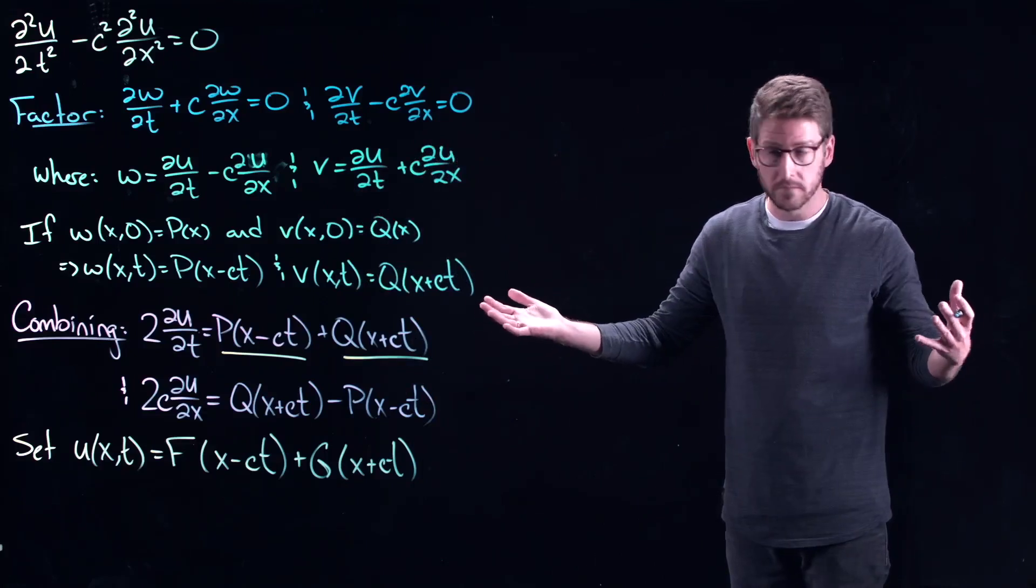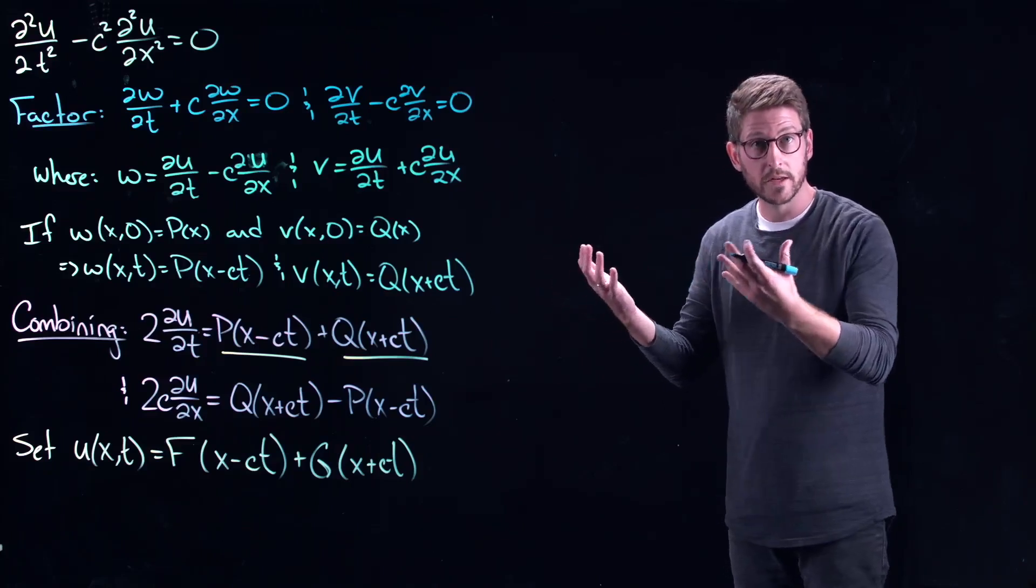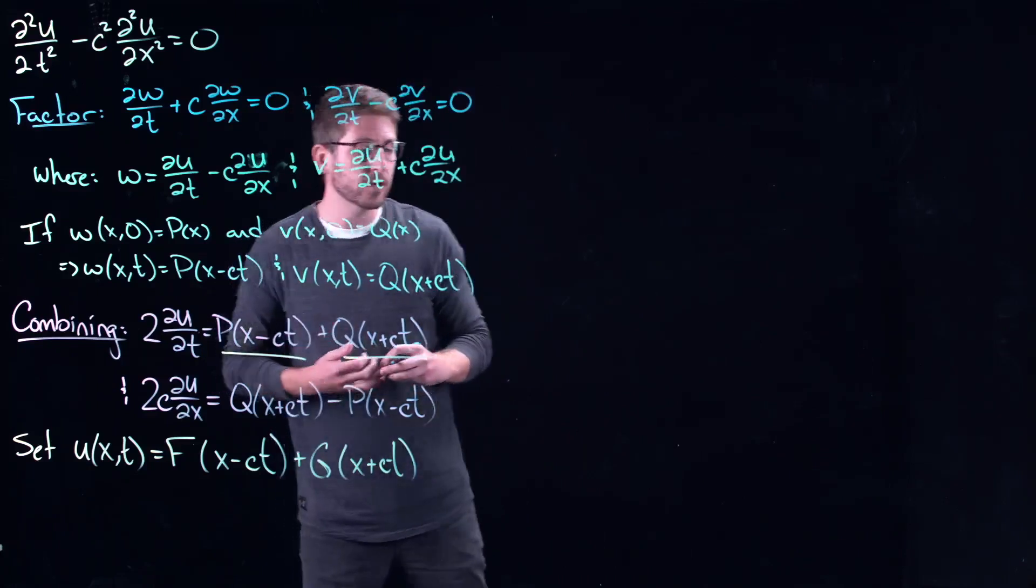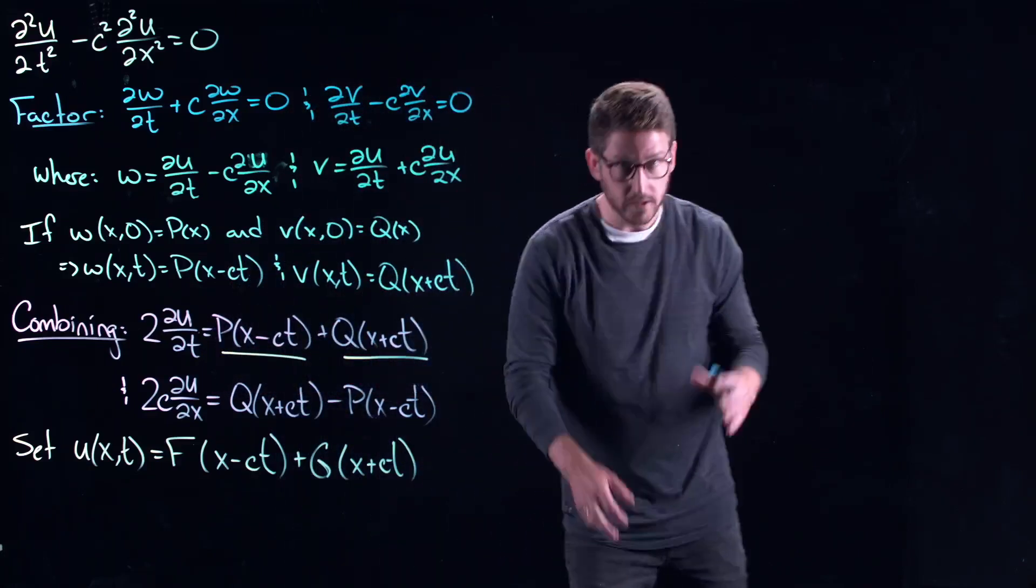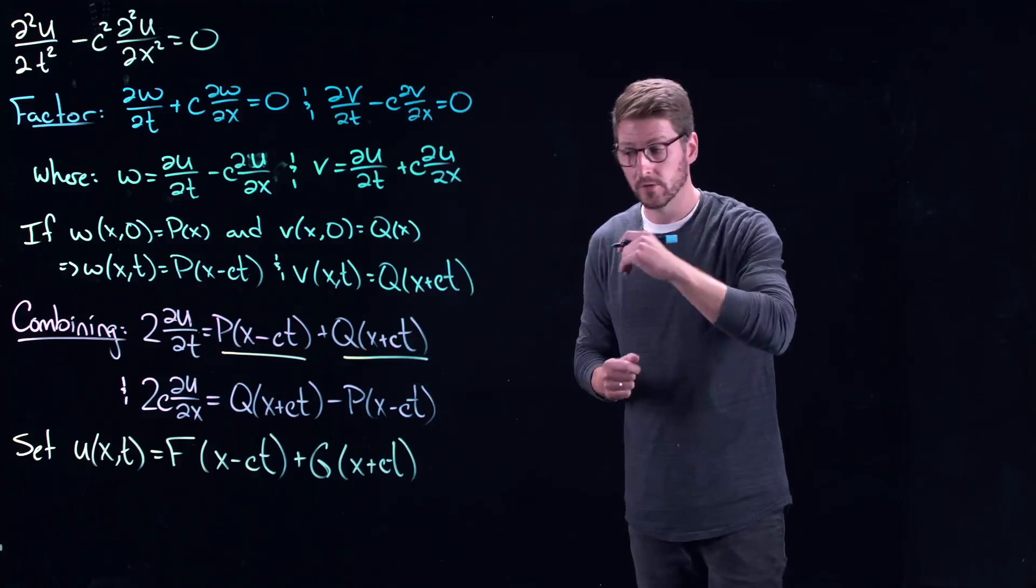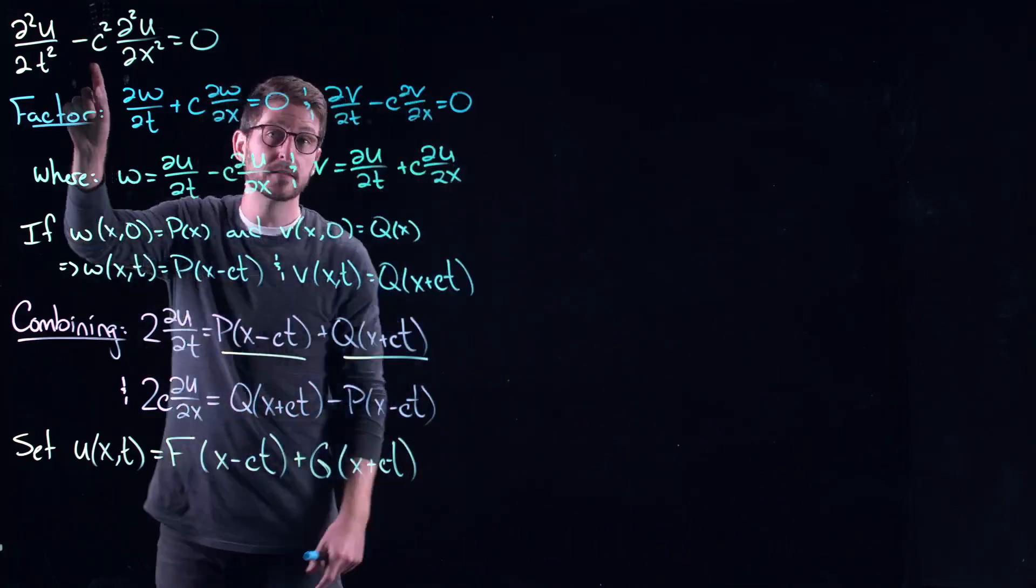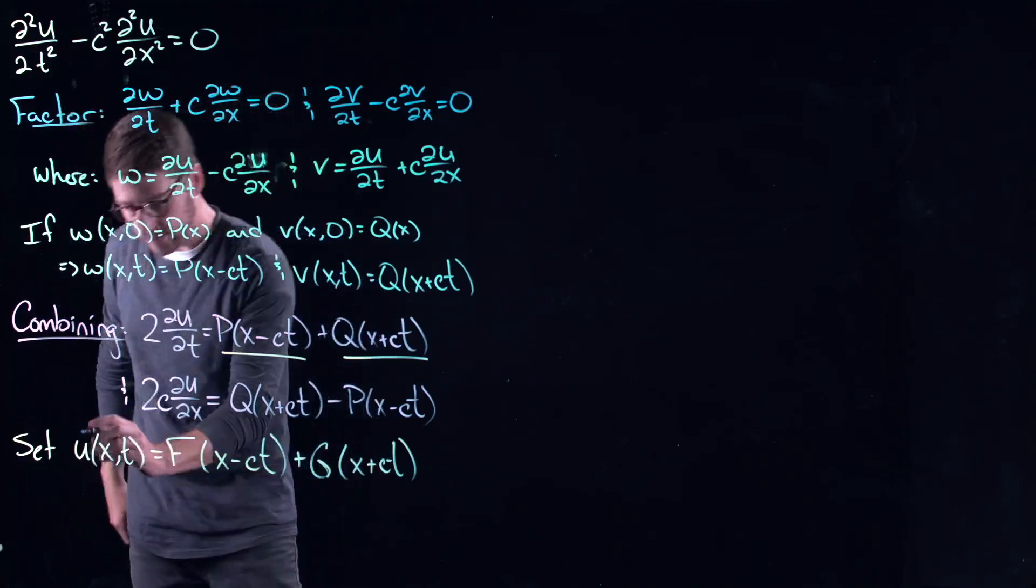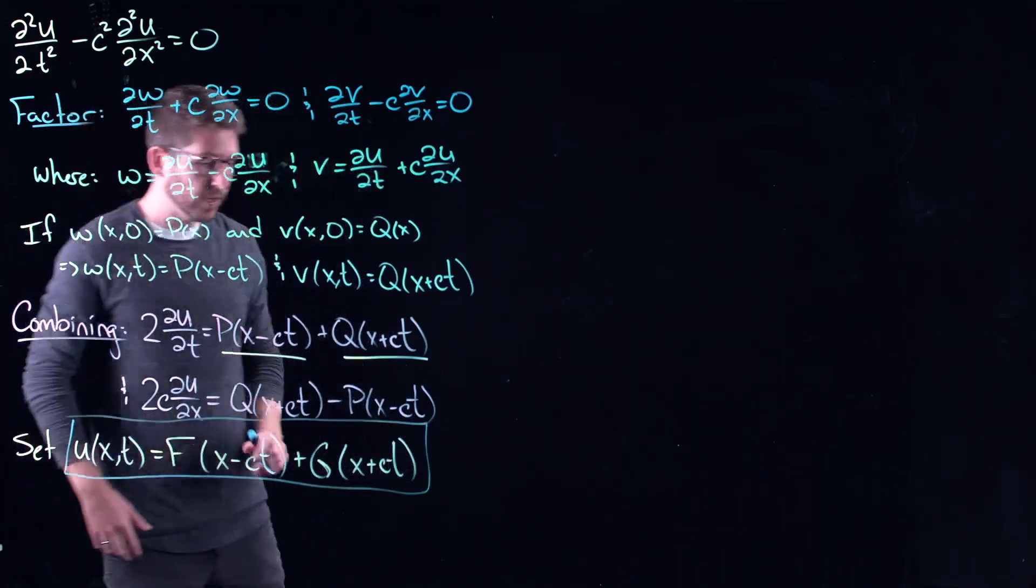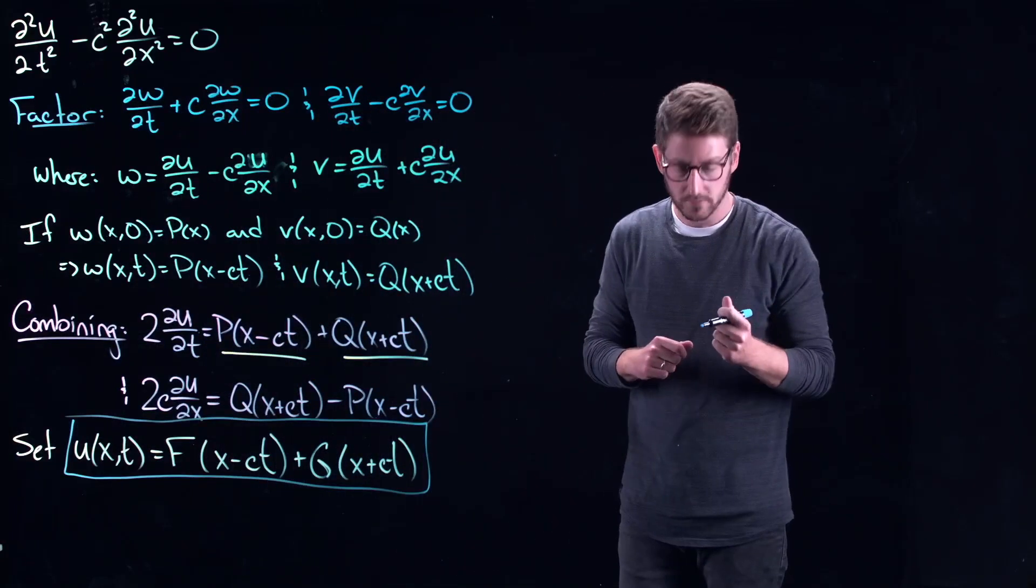So this is when there was a very strong French school of people working on partial differential equations. Fourier being one of them, right? But we also had people like Poisson. That's another equation that we've seen already in this lecture series. There was a number of very strong mathematicians all working and supervised by each other that were working on these problems in partial differential equations.